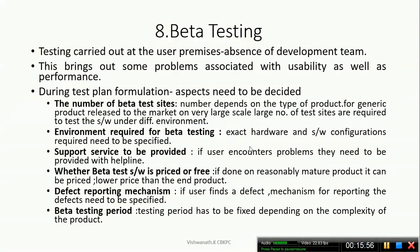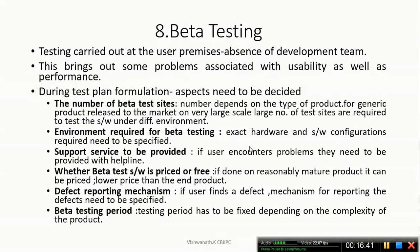The third aspect is support service to be provided. If a user encounters a problem, they need to be provided with help. It is necessary and compulsory to provide a helpline or support when releasing an application. The fourth aspect is whether the beta test software is priced or free.